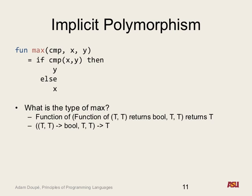Now we have a very general function. We can call max with the less-than operator and pass in 10 and 200. We can also call it with a string compare function to compare strings. The less-than function takes two integers and returns a Boolean, so those t's must be integers and the return must be an integer. String compare takes two strings and returns a Boolean, so the parameters must be strings and the return is a string. And we got all of this without specifying any types.